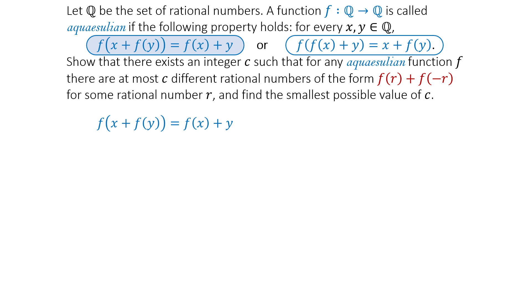When we apply function f, the argument x is transformed into f(x), and f(y) is transformed into y. The two conditions must occur simultaneously for function f. Since x and y are variables, we can swap them.